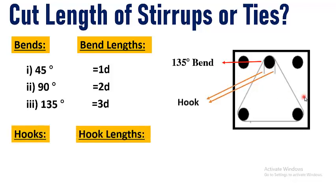Now there are two hooks as we can see here. There are two hooks and the hook length is normally taken as 9D or at some places you will see it as 10 times of diameter of bar.